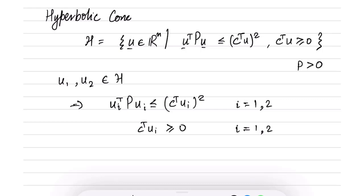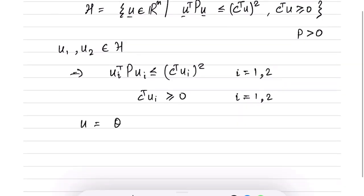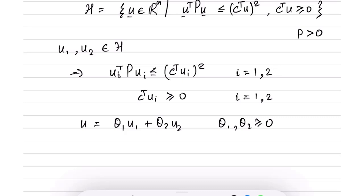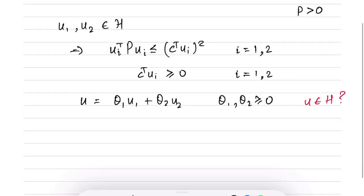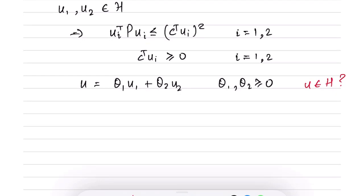We need to show that the point u = θ1 u1 + θ2 u2, for θ1, θ2 greater than or equal to 0, also belongs to H. To show this, we can simply observe that this constraint can be written using the square root decomposition of P.